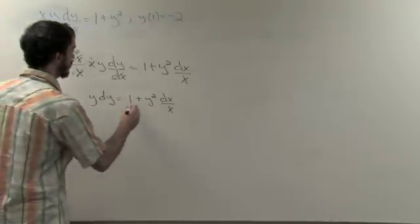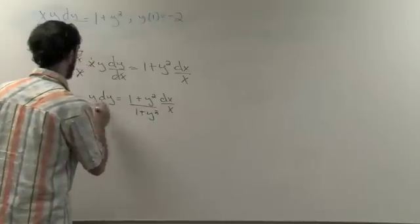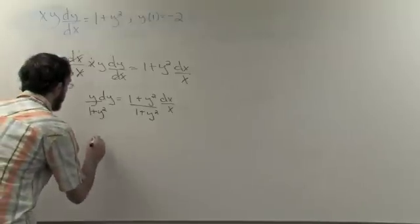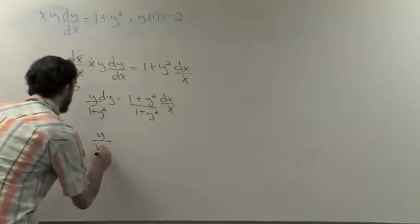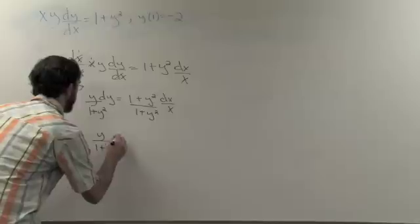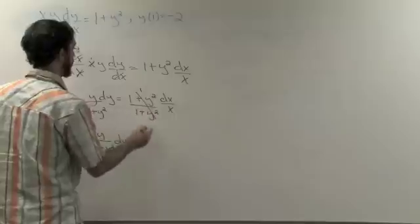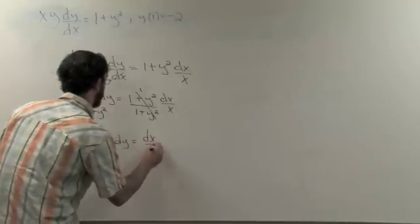Next, we should divide both sides by 1 plus y squared. This leaves us now with y over 1 plus y squared, dy. This reduces to 1, leaving on the right side of the equation, dx over x.